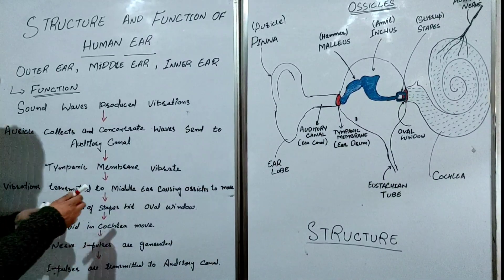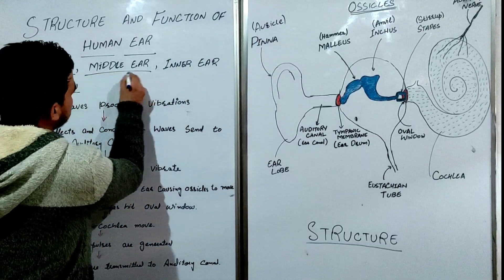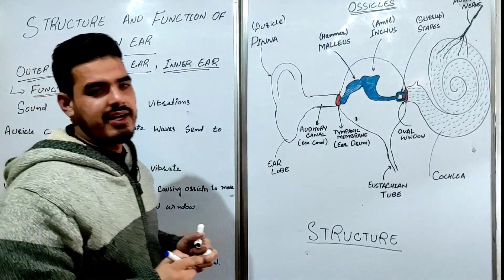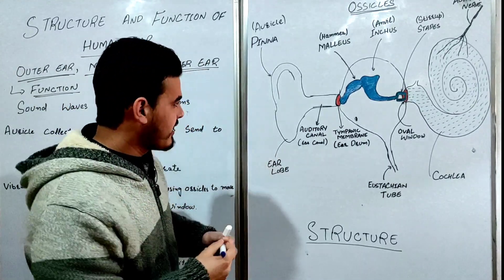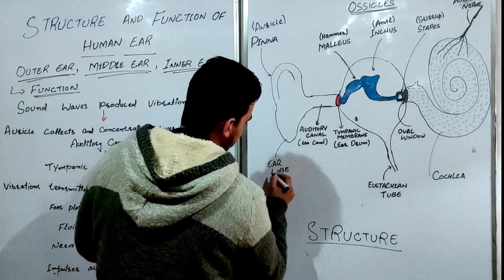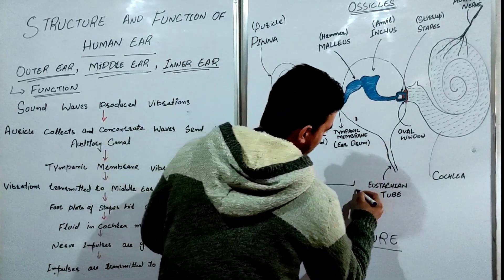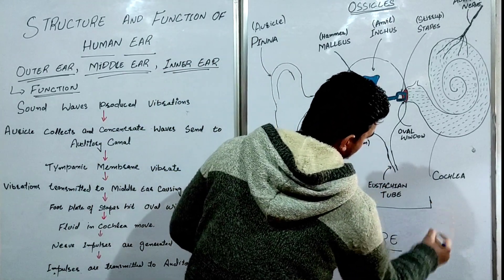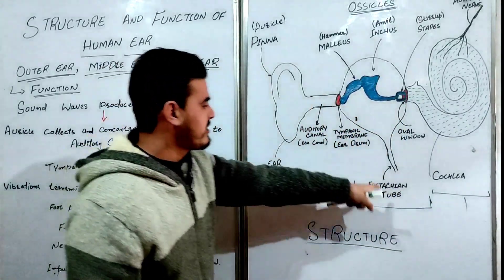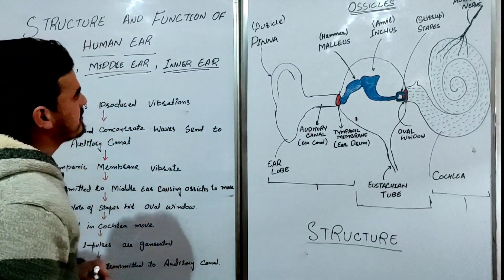The human ear has three parts: the outer ear, the middle ear, and the inner ear. This is the outer ear, this is the middle ear, and the last is the inner ear — you can see the structure.